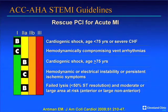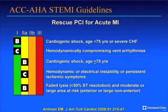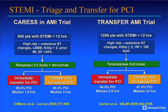Rescue therapy is indicated in patients with cardiogenic shock, particularly under 75 years of age, or hemodynamic compromise. Even for patients greater than 75 years, it is recommended for cardiogenic shock, hemodynamic instability, or failed lysis. The best measurement of failed lysis is less than 50% resolution of ST elevations on ECG after fibrinolytic therapy. A more aggressive approach — routine transfer of high-risk patients to PCI centers after fibrinolysis rather than waiting for signs of failure — has become a standard of care.